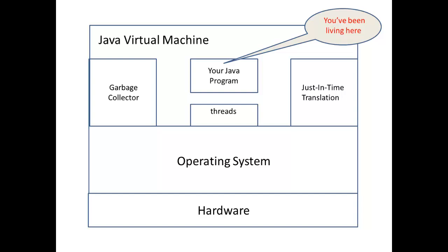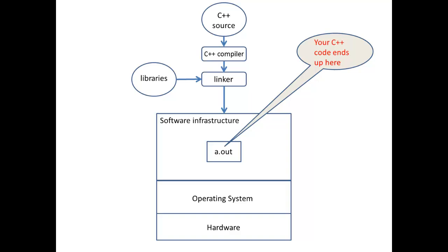Looking at a Java program for a minute — your Java code plugs into a much bigger software infrastructure. There is the Java Virtual Machine, a garbage collector, a just-in-time translator, and threads. What is all this stuff? We will find out. And it sits on top of the operating system, which sits on top of the hardware. CS620 will cover operating systems in detail, so in this course we will usually pretend that we are programming directly on top of the hardware. Or consider a C++ program — your C++ source code must first be translated by the C++ compiler to native code for the machine you are running on, then it is linked with code in the C++ libraries. In the end, your code ends up sitting in the middle of a big software infrastructure. By the end of the semester, this picture will make a lot more sense to you.